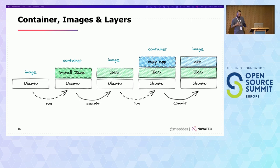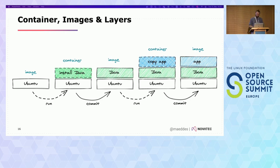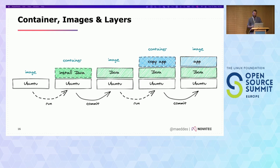Looking into those images is the most important thing, because if we want to improve the way our images are built, we should understand a bit about their structure. The way things started with Docker was the concept of an image and a container: with a run command you'd instantiate it, make changes, and with a commit you'd go back to a new image. In the case of a Java application, you'd have a base OS container, install a Java runtime, copy the application, and roughly have three layers: Ubuntu, Java, and the app on top.